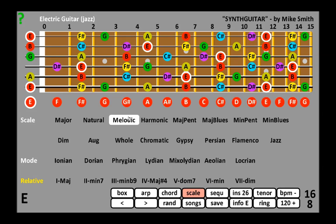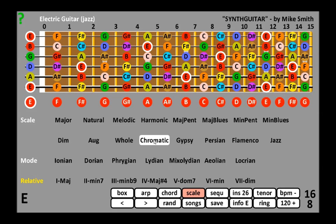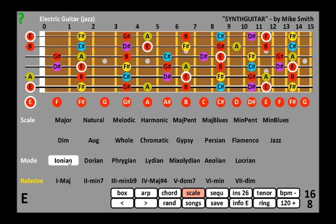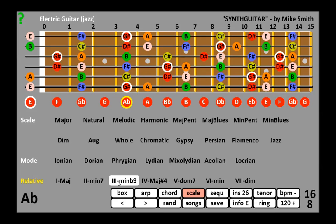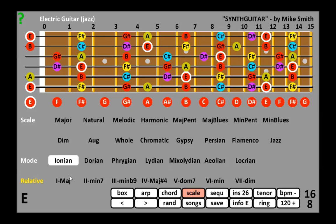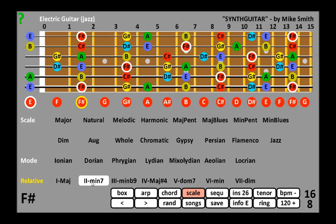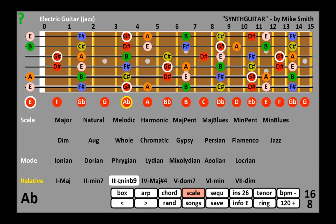There are a number of common scales on the top row, a few more esoteric ones below, and modes or relative modes on the lower two rows. This allows you to see the relationship between modes and the standard major scale. As you can see, the notes are the same, but the relative scale starts from a different root note.